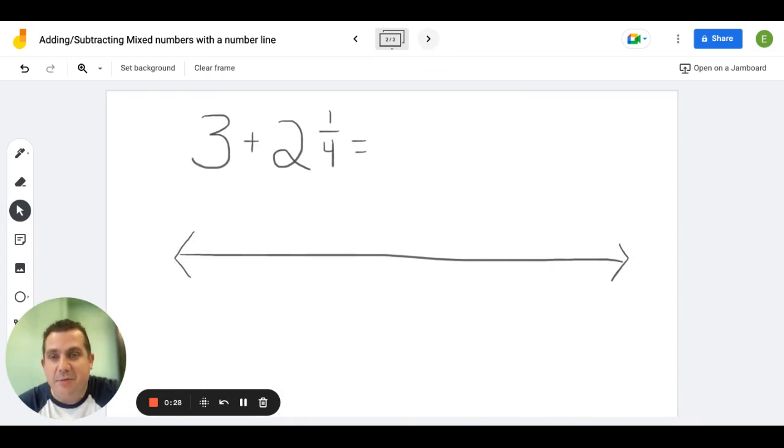We have 3 plus 2 and 1/4. So what you want to do here is draw your number line. We want to look and see what we have for our wholes first. We know we have 3 wholes and we have 2 wholes. So we're going to start our number line like we should always start when we're adding - we're going to start it at zero.